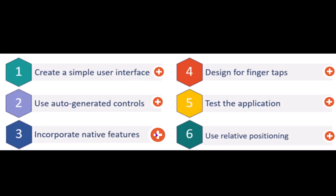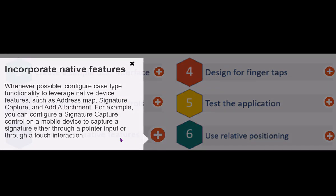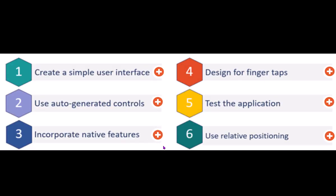Incorporate native features wherever possible. While designing your mobile app, you have native features such as signature control, address map, and add attachment — use them wherever possible rather than writing your own custom features.